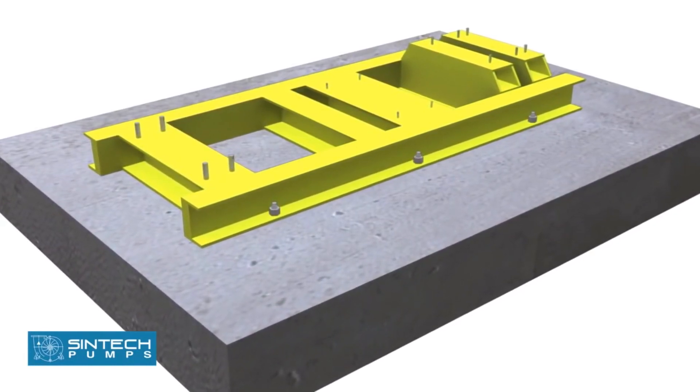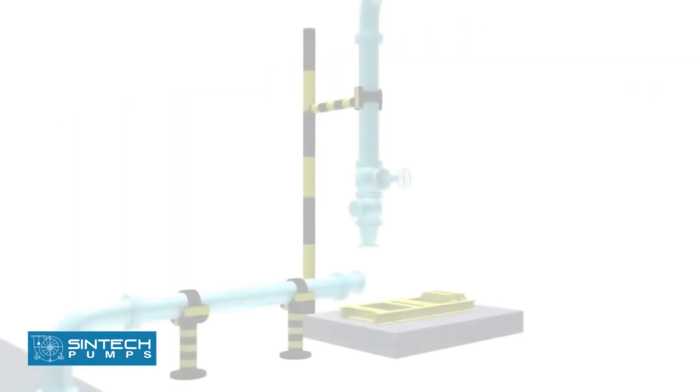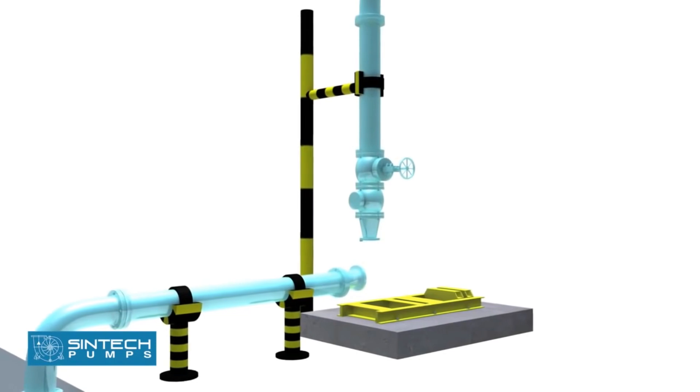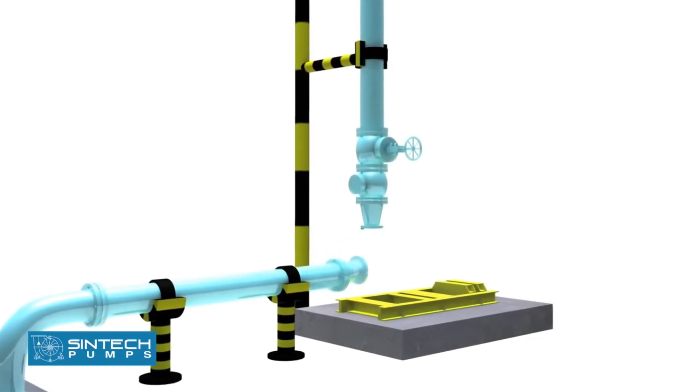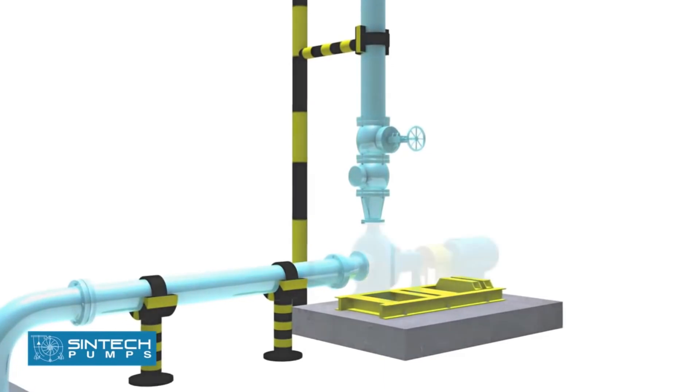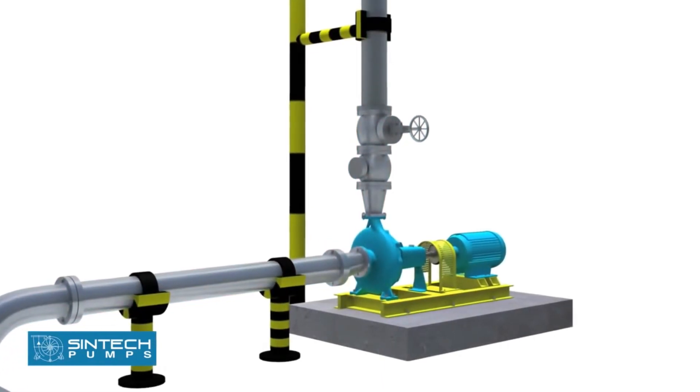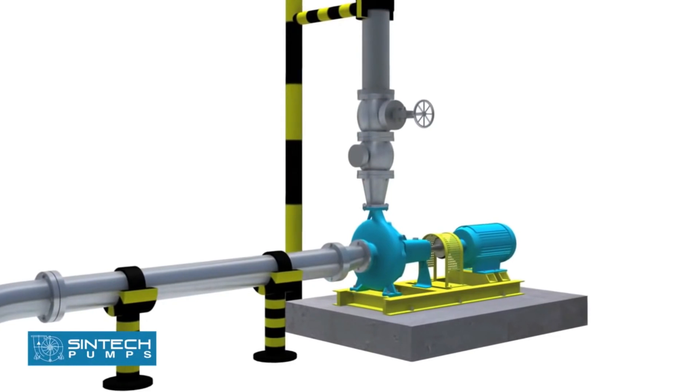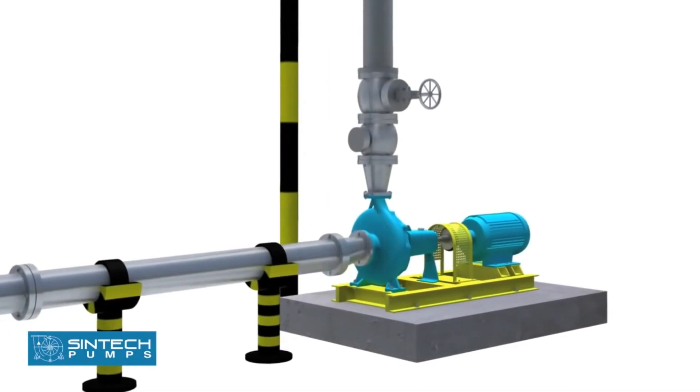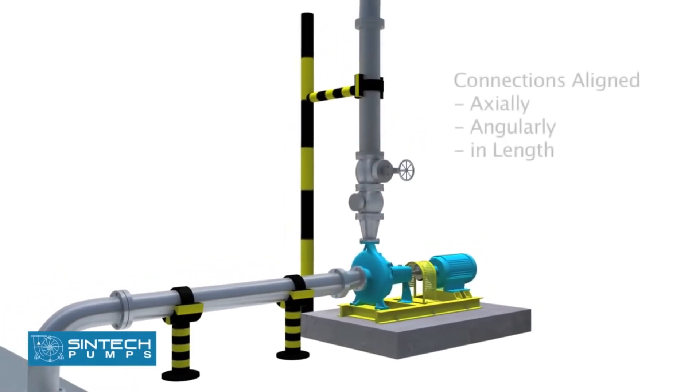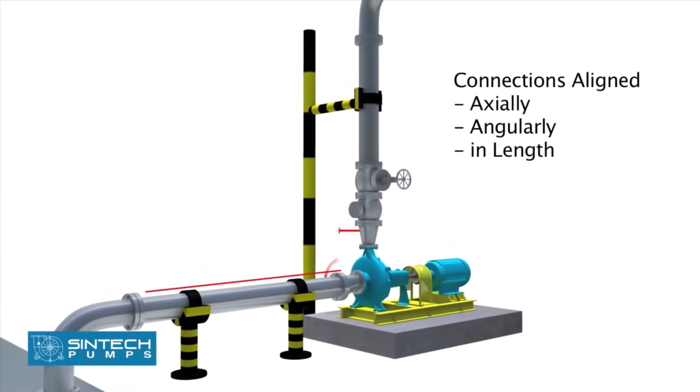Piping associated with the pump must be anchored and supported independently of the pump and should never put any strain on the pump casing. When the pipes are not supported, their weight is borne by the pump casing and may cause them to crack or deflect. It is important that the connections be carefully aligned axially, angularly, and in length.